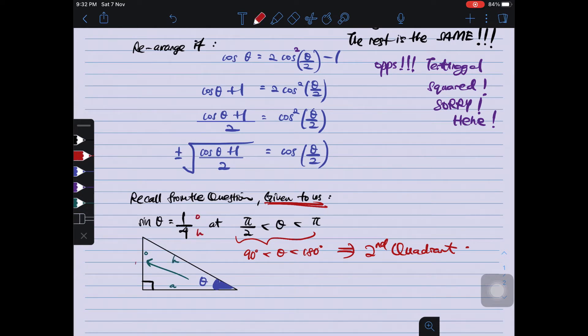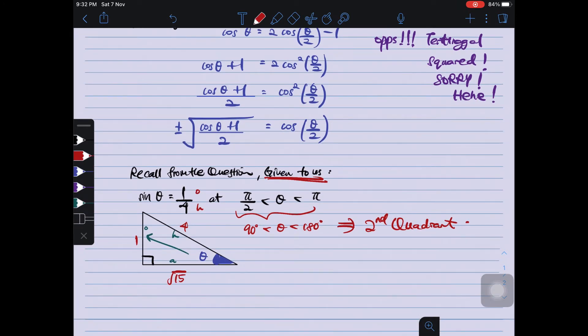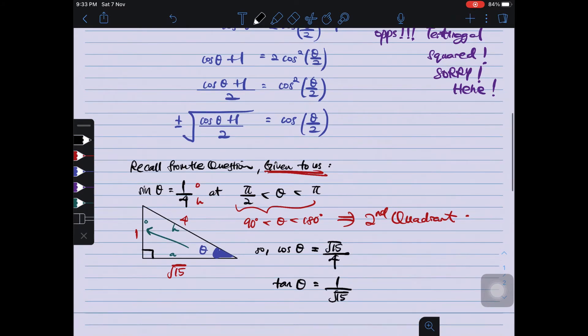Of course, kena faham sendiri lah. That is the second quadrant. So you do opposite adjacent hypotenuse. You masukkan nilai SOH 1 and 4. You dapat nilai adjacent. You dapat nilai adjacent, iaitu √15. And then, you keluarkan nilai cos θ instead. So cos θ is √15/4.